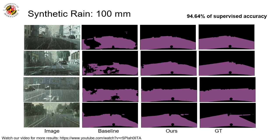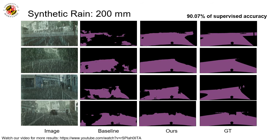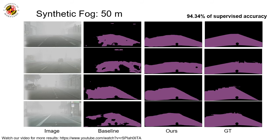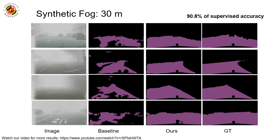We now present a few qualitative results. Please watch our YouTube video at the link shown here for more video results under varying weather and lighting conditions. Here are a few results on synthetic rain corresponding to an intensity of 100 mm — our unsupervised method achieves 94 percent of supervised accuracy. Our model performs well even at higher rain intensity of 200 mm, achieving 90 percent of supervised accuracy. On 50-meter fog, our unsupervised method also achieves 94 percent of supervised accuracy, and even at very high fog intensity our unsupervised network segments road regions with high accuracy, achieving 90 percent of supervised accuracy.